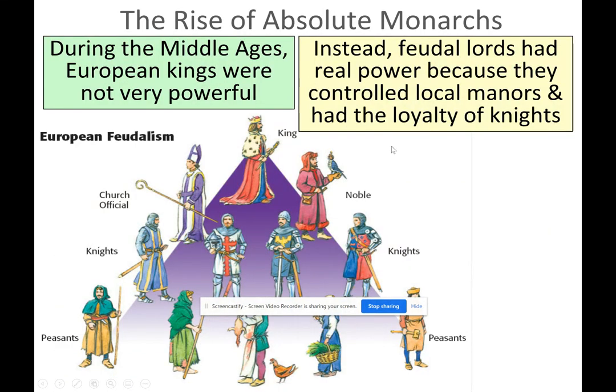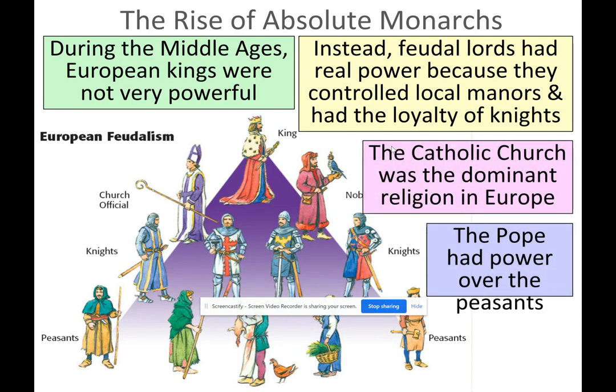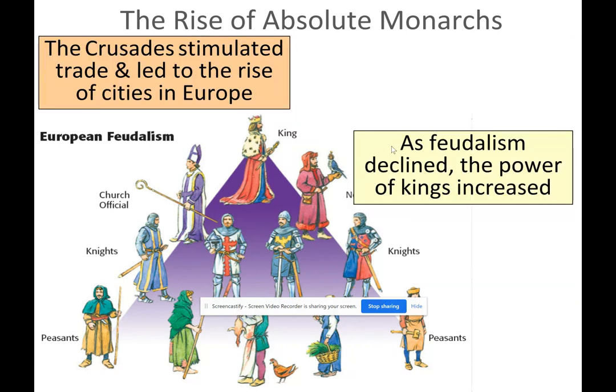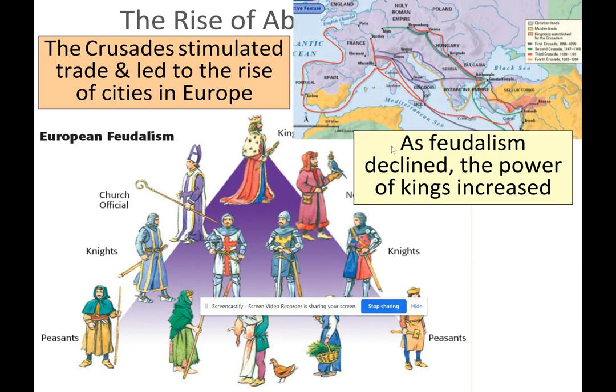During the Middle Ages, European kings were not very powerful. Instead, the feudal lords had real power because they controlled local manors and had the loyalty of knights. The Catholic Church was a dominant religion and the pope had power over the peasants. The Crusades stimulated trade and led to the rise of cities in Europe. Feudalism was on the decline, and so the power of kings increased.